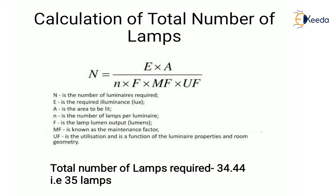Now we calculate the total number of lamps using the formula: N = (E × A) / (n × F × MF × UF), where N is the number of lamps, E is the average illumination (400 lux), A is the area (20 × 15), n is lamps per fixture (2 tube lights), F is the lamp lumen output (3250), MF is the maintenance factor, and UF is the utilization factor. Substituting all values, we get 34.44, which rounds up to 35 lamps.